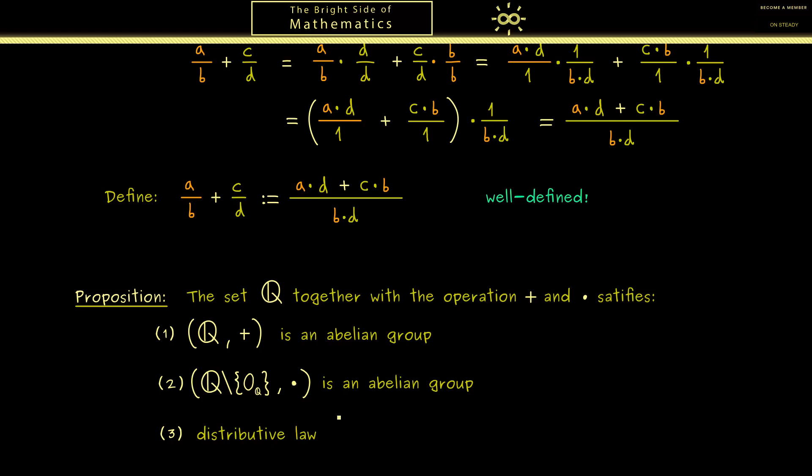Now please note having all these properties together is very nice. We can add, we can multiply, we can subtract, we can divide with the exception of 0, and we can combine both operations. For this reason when we have a structure like this it gets a new name. We call it a field.